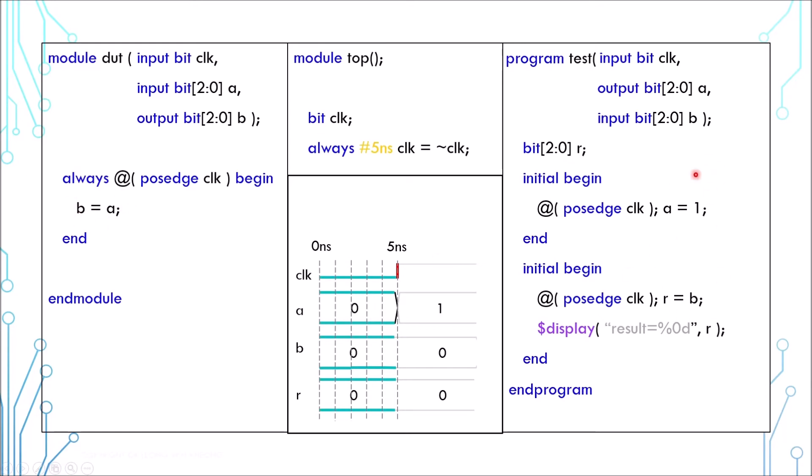Now back to the wave. For these three assignments, this one is in active region and these two are in the reactive region. So active region is done first. B gets the value of A. There is no change of value from 0 to 0. I'm showing a change here to indicate this 0 comes from A and not from the old value of B.